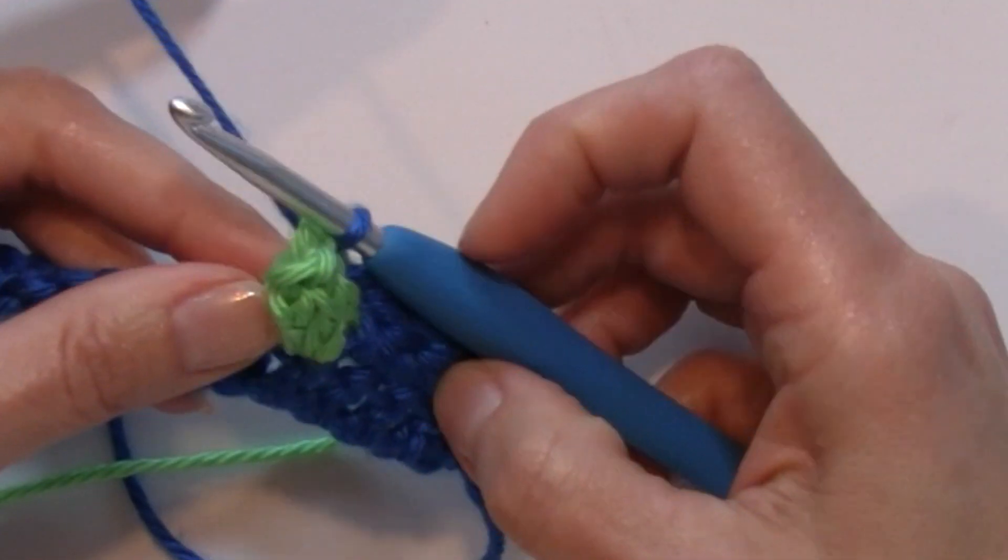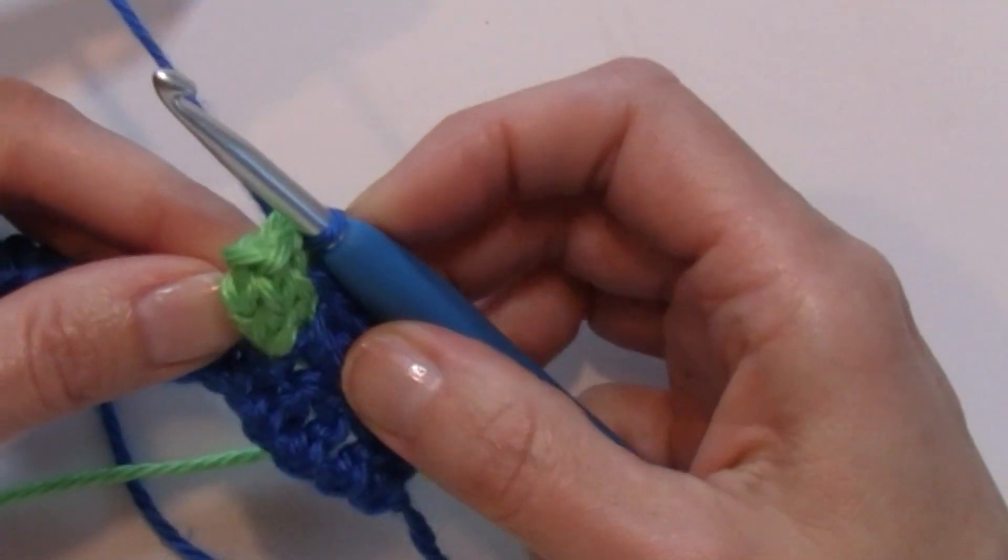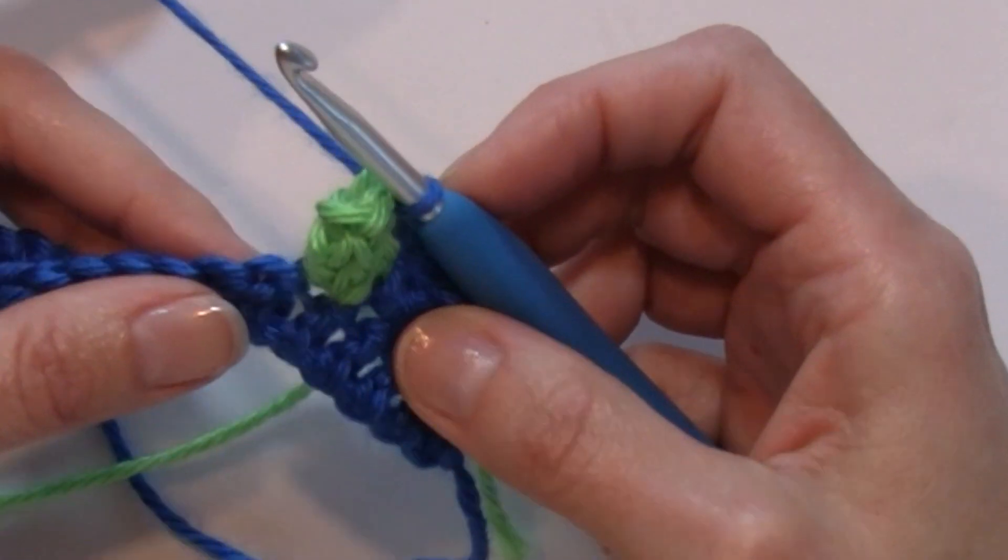You see here what happened is it pushed all of those double crochets together, pops those out, hence the name popcorn stitch.